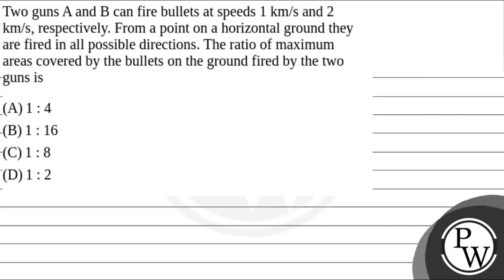Hello, let's get to the question. Question C is: Two guns, A and B, can fire bullets at speeds 1 km per second and 2 km per second respectively from a point on a horizontal ground.